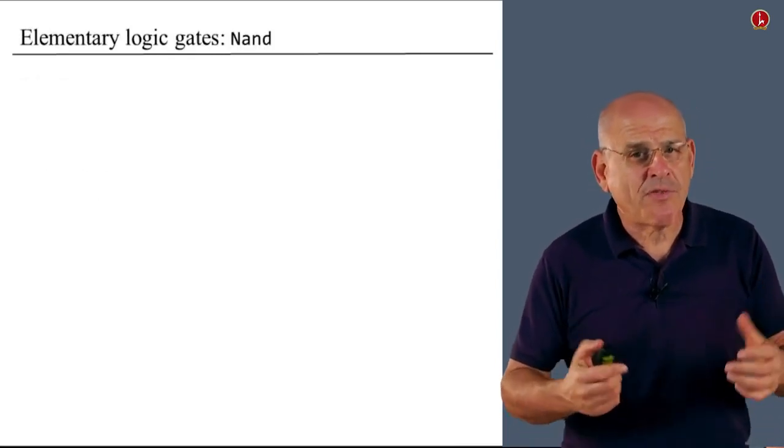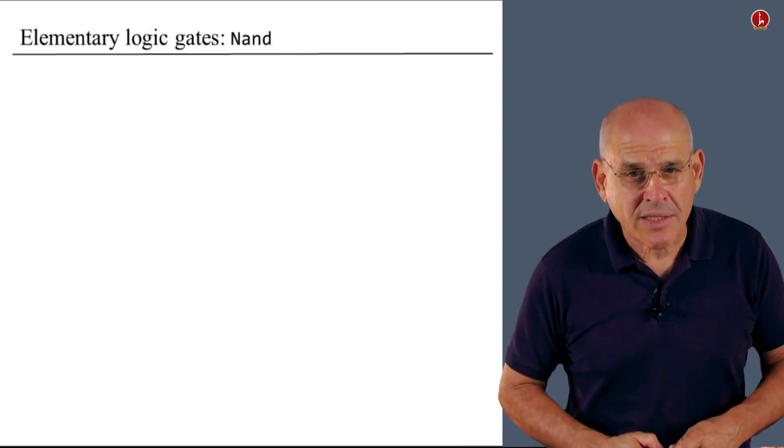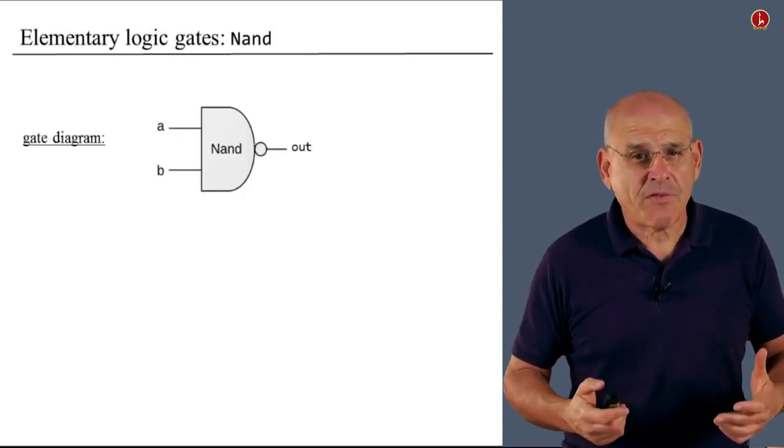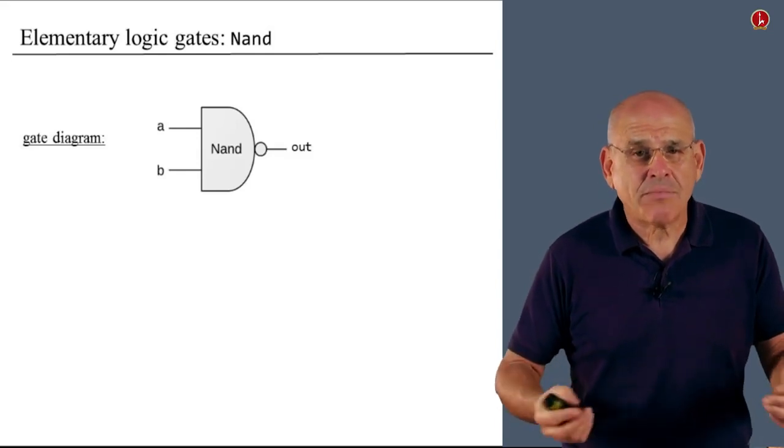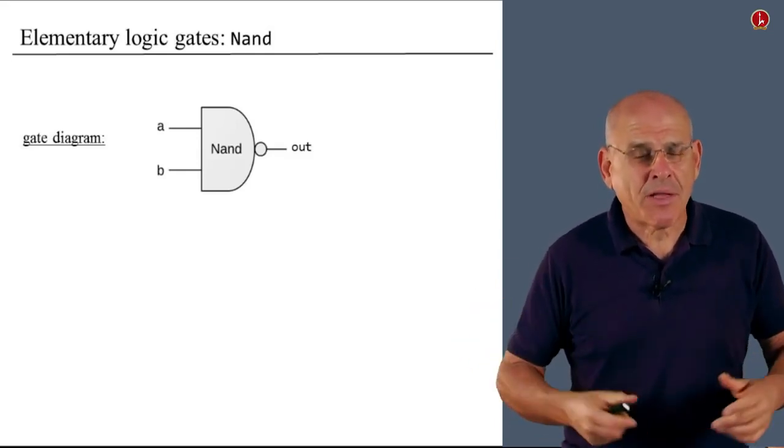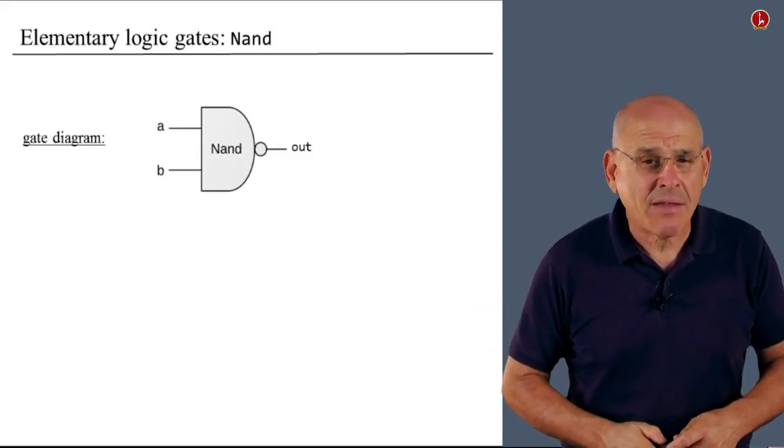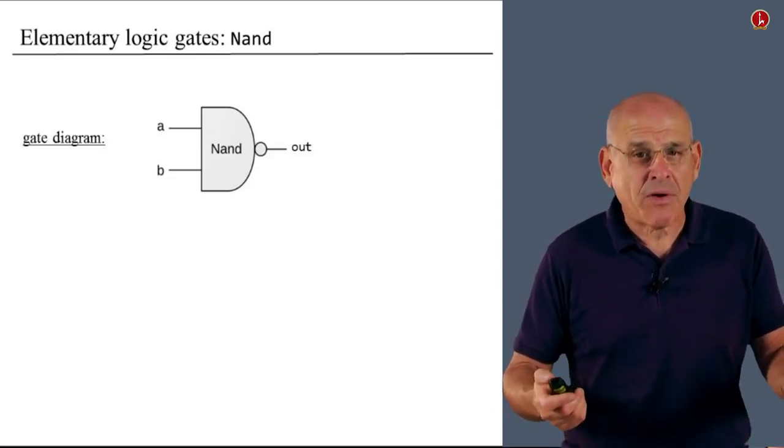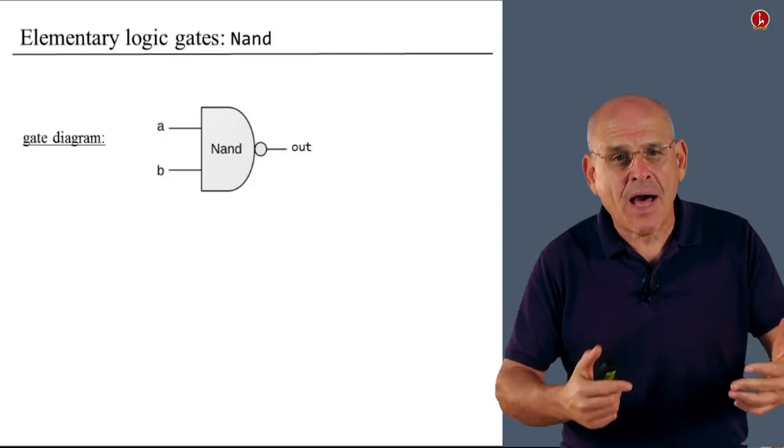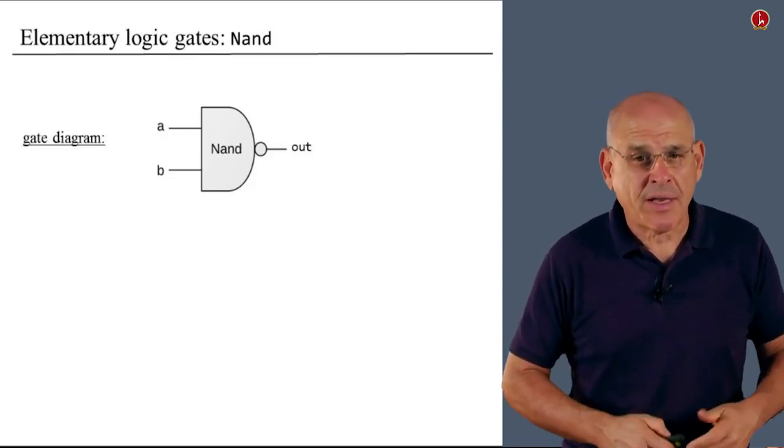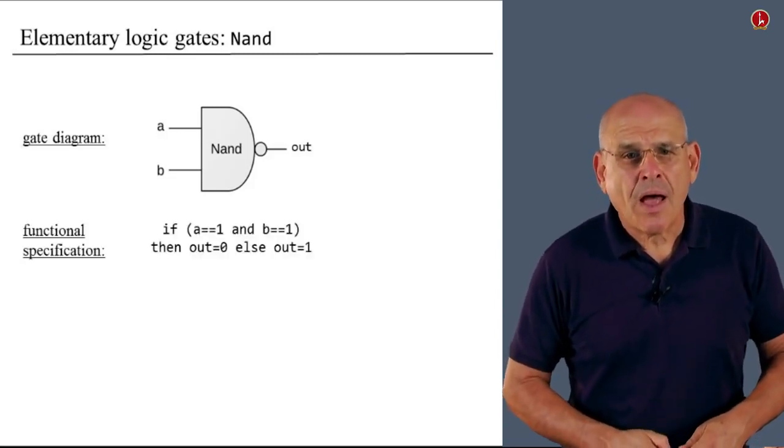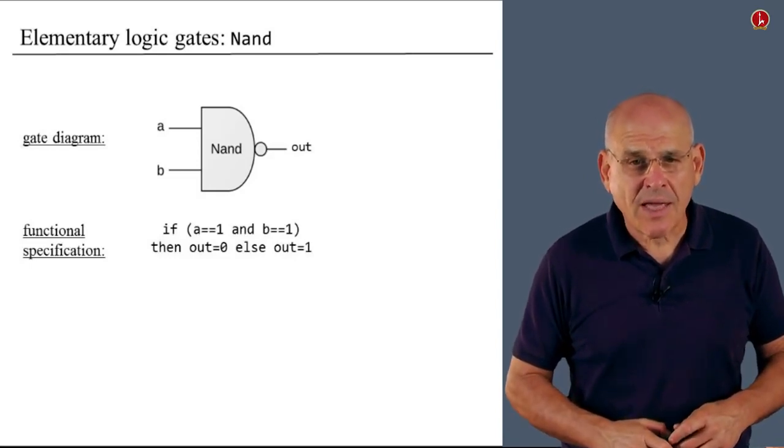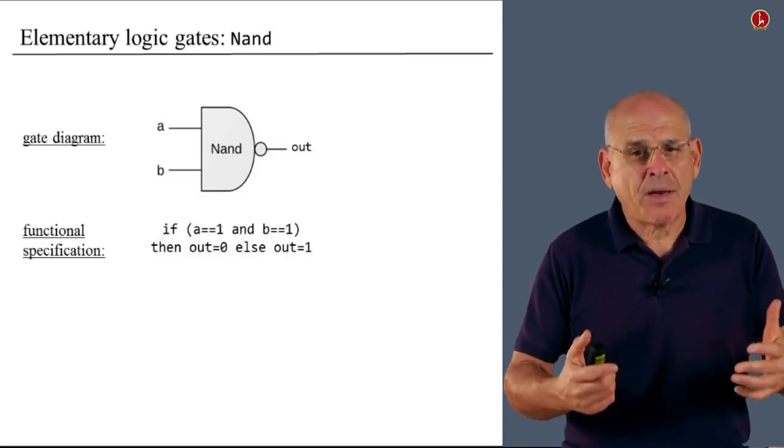So let us begin with the most fundamental logic gates that we use in this course called NAND. Here's the definition of a NAND. This is actually the standard diagram that we use to describe a NAND gate. It has two inputs and a single output. Everything here is binary, so a, b, and out are either 0 or 1.